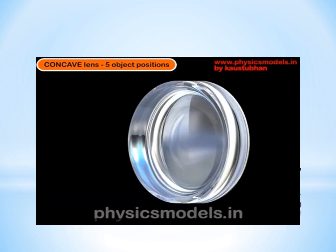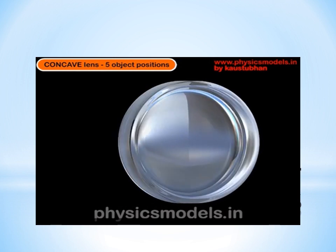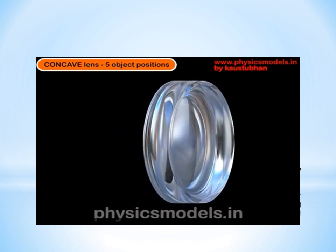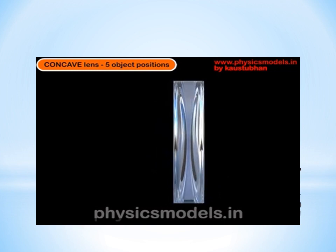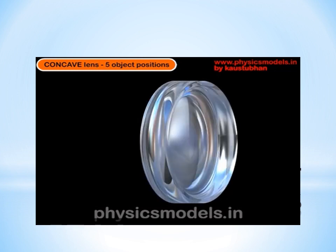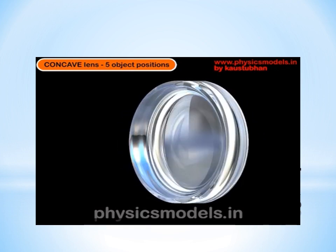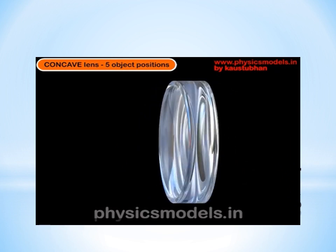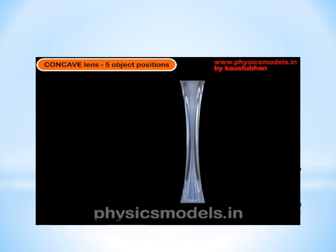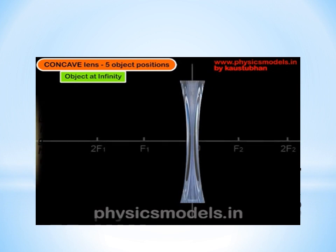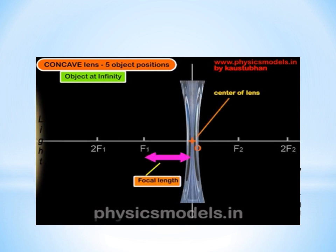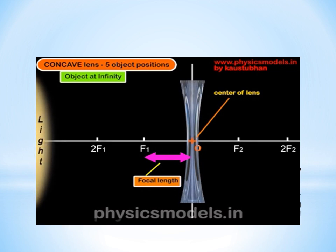Now let's look at an animation. I am rotating the concave lens and you can see its rounded shape, with the material thinned out at the center. That's why when you cut it on its vertical axis, you see the shape that you see in the textbooks. We draw the principal axis and mark out F1 and 2F1 on the left hand side, F2 and 2F2 on the right hand side. We plug in a light source so that the light rays will always travel from left towards the right.